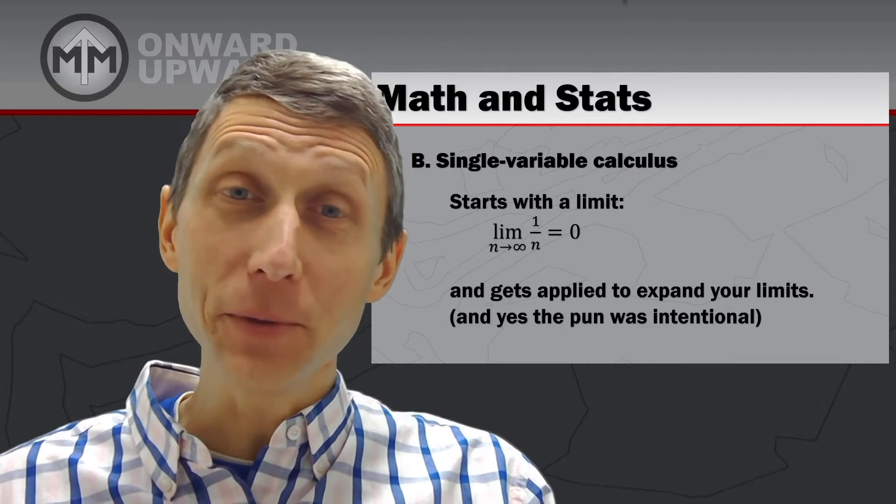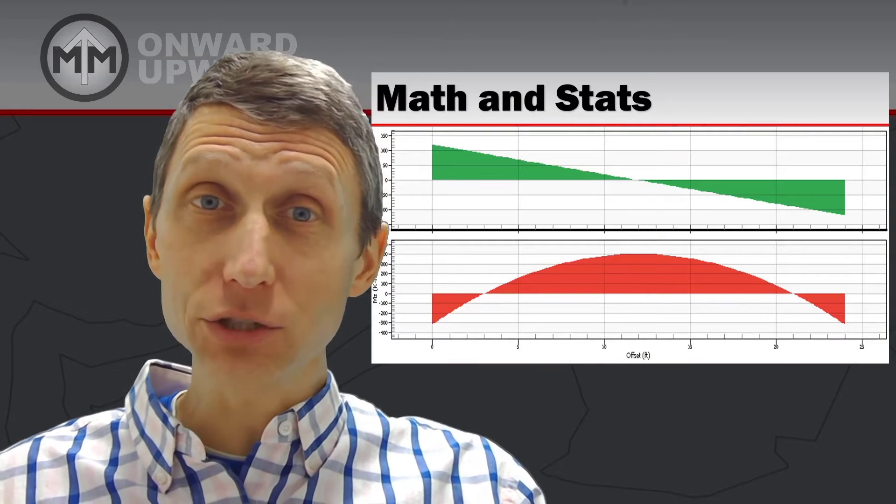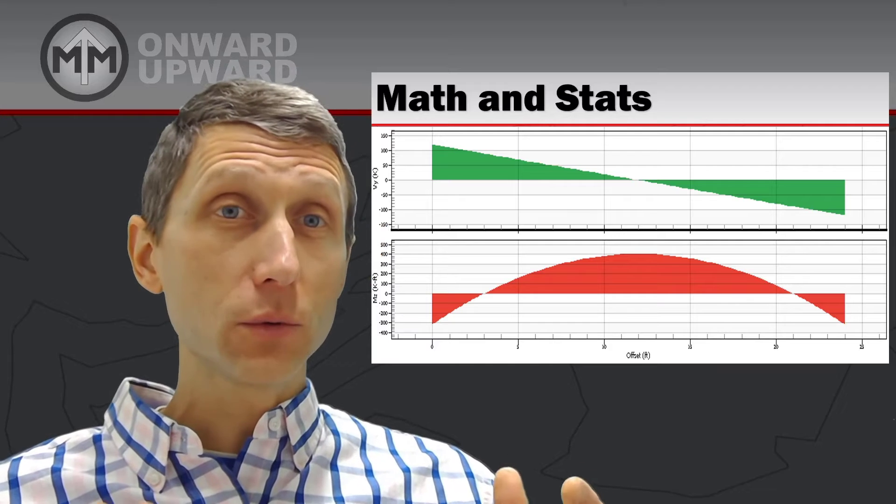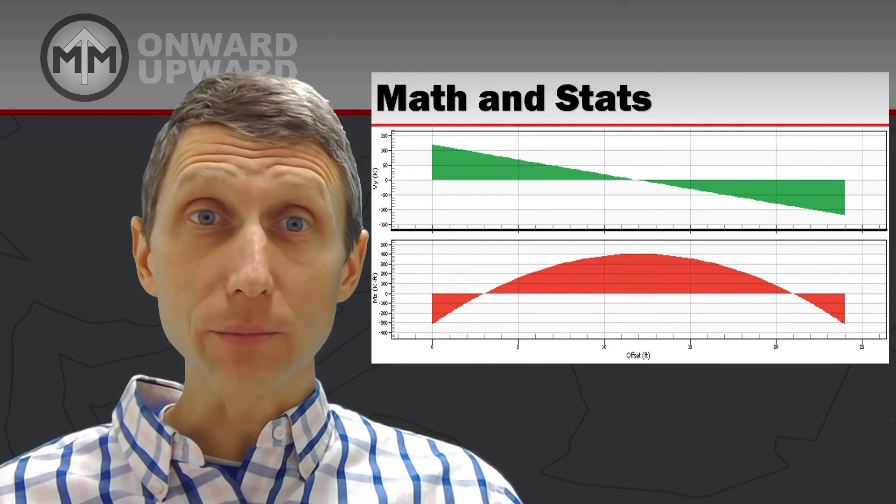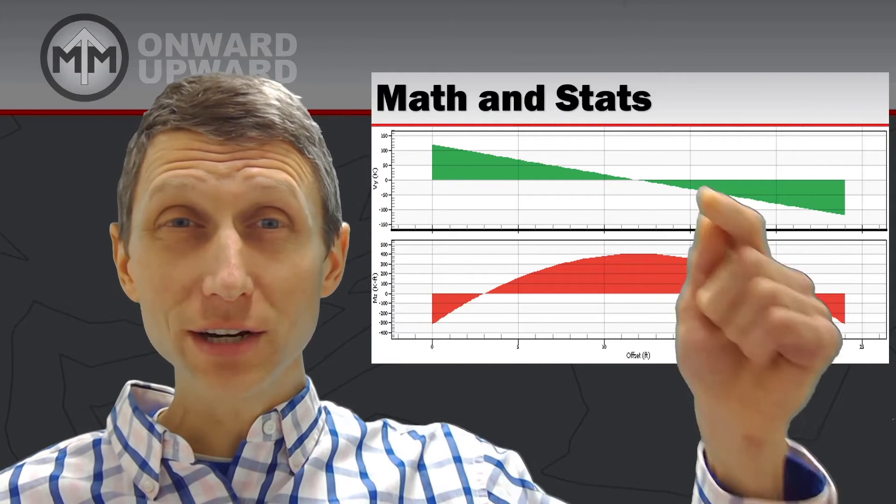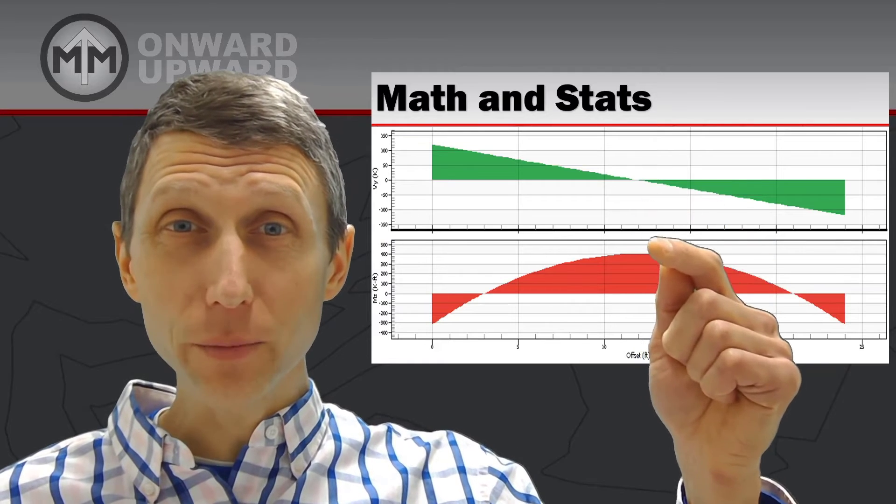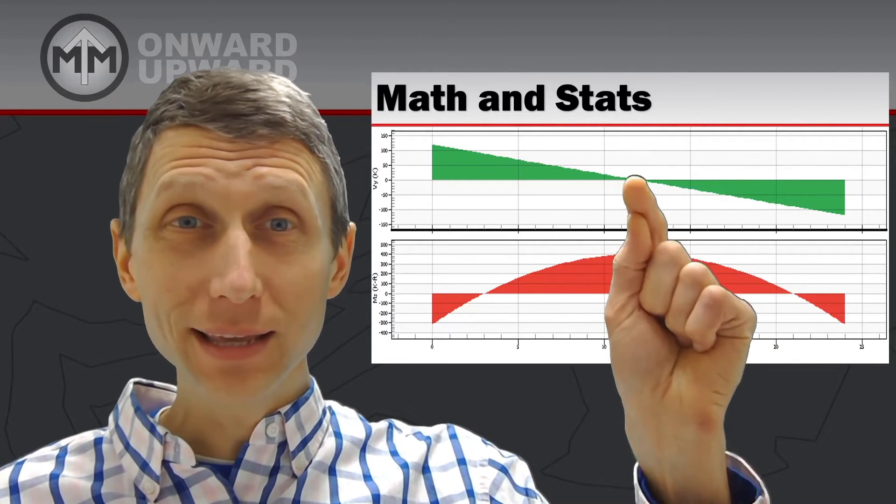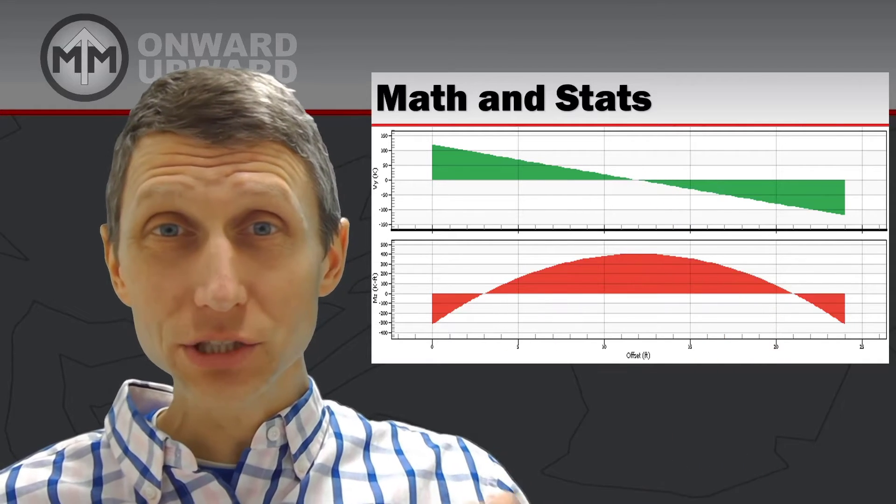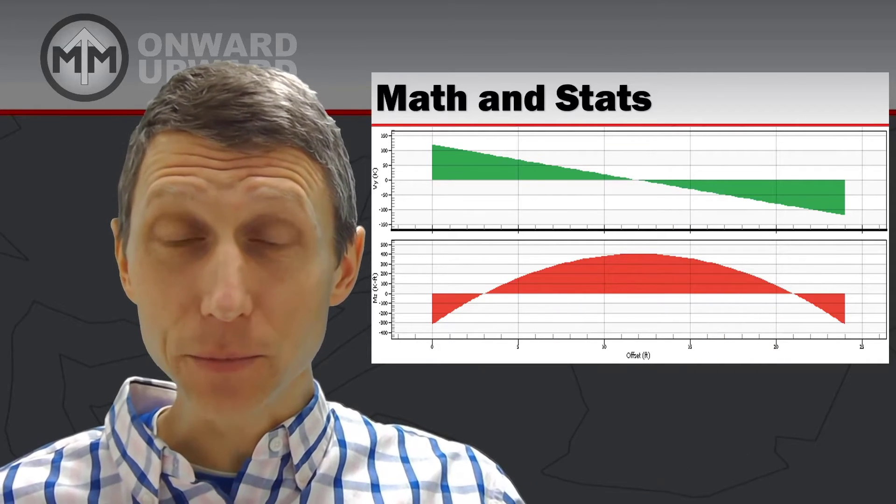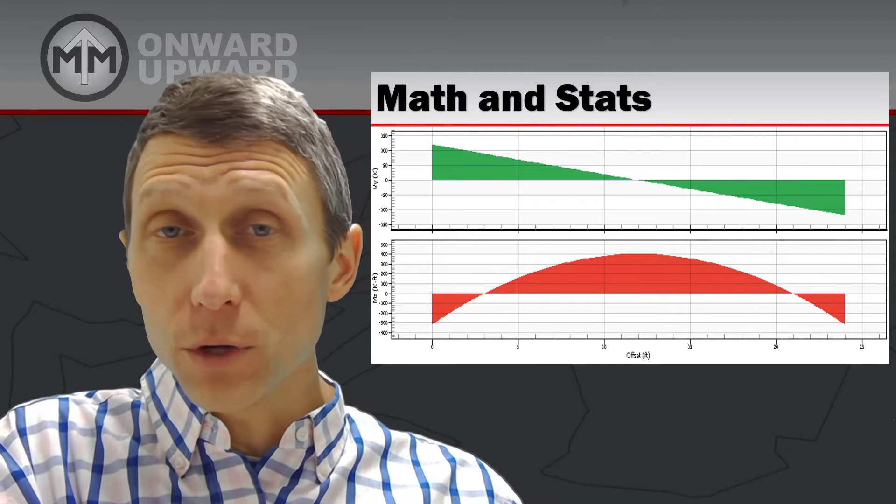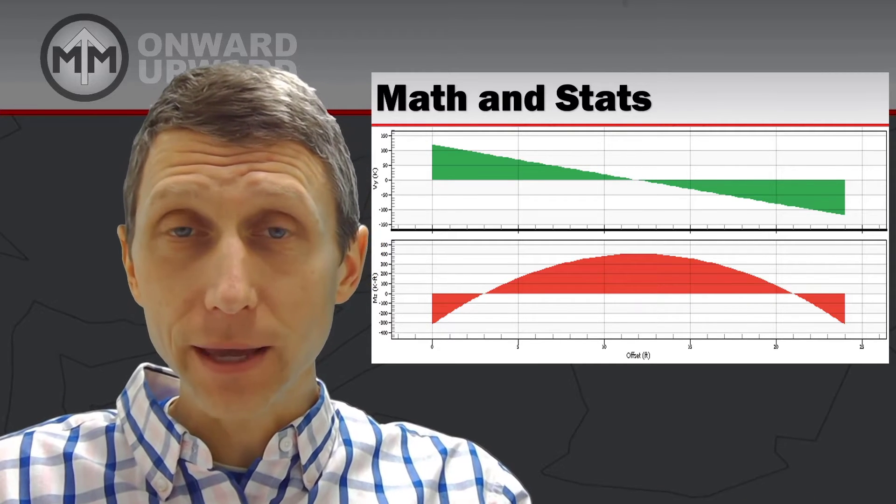And yes, the pun was intentional. But it gets applied in things like shear and moment diagrams, where the height of the shear diagram is equal to the slope of the moment diagram. So the height of the shear diagram where the shear goes to 0, we have our maximum moment. In other words, we take the derivative of this moment function and we can get where the shear is 0 is going to give us our maximum. So this is kind of cool. We take that calculus, we can apply it as well, once we know how to do that single variable calculus.